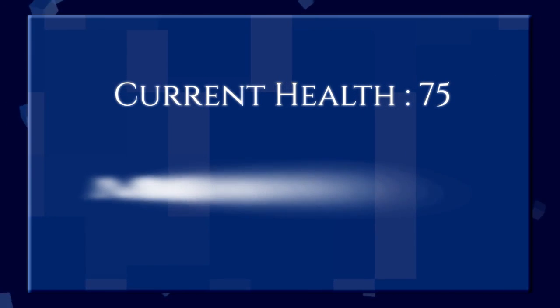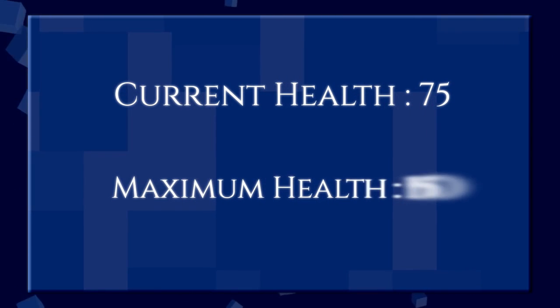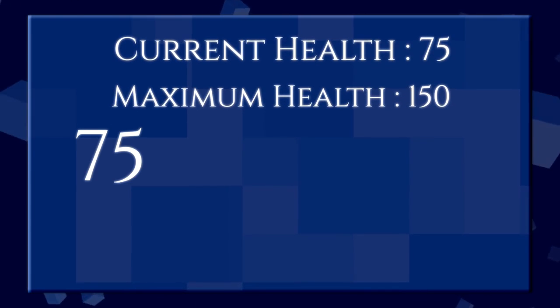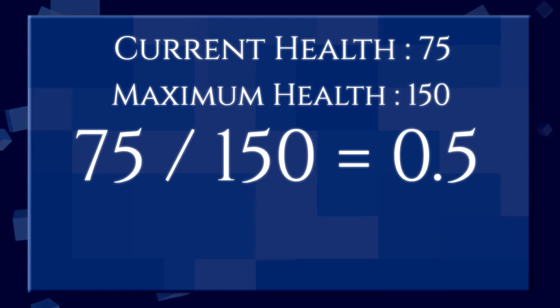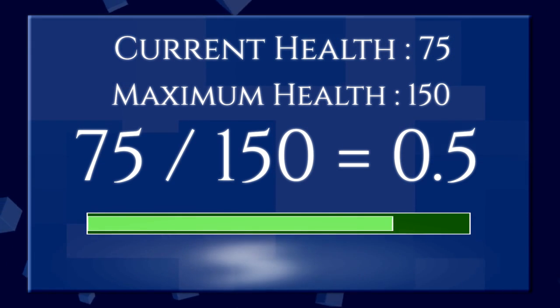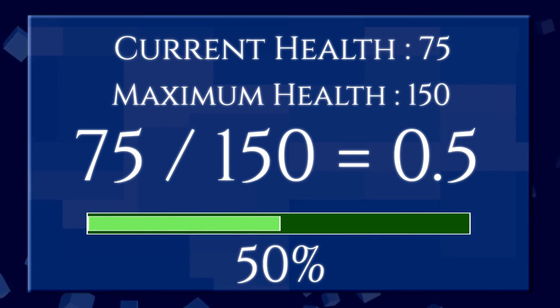Health bars are basically everywhere now. Let's find out how they're made in a programming context. The math behind a health bar is quite simple — all we've got is two values: a current health value and a maximum health value. Using these two values we can calculate a ratio and use this ratio to scale some piece of UI or simply display it to the user.